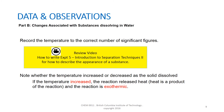When the solid dissolves, if an increase in temperature is observed, then the dissolution process has released heat and the reaction is exothermic; heat is written as a product of the chemical reaction. If a decrease in temperature is observed, then the dissolution process has absorbed heat and the reaction is endothermic; heat is written as a reactant in the chemical reaction.